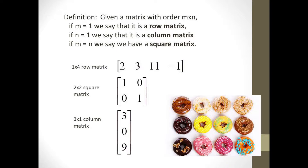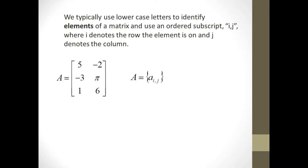There are some special cases that warrant their own name. If a matrix only has a single row, then it's called a row matrix. If it has a single column, it's called a column matrix. And if the number of rows is equal to the number of columns, it's called a square matrix.